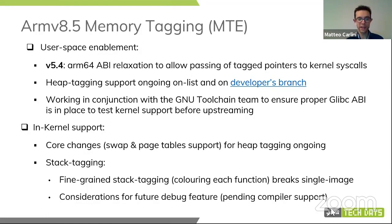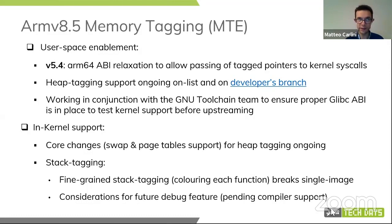The in-kernel support — the core changes for enabling the architecture for swap and page table support — are ongoing for heap tagging only. Stack tagging is more tricky. Fine-grained stack tagging — coloring each function — is known to break the kernel single image, which will be really hard to accept. We are looking into alternatives for more coarse-grained tagging. The current thinking is that this is probably going to be a debug feature, which is definitely pending compiler support for stack tagging. That will not come before 2021, so stack tagging will probably be a debug topic for 2021.